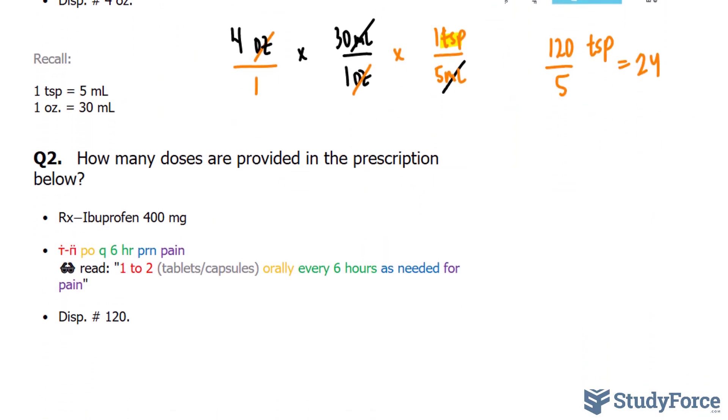This time we're asked, how many doses are provided in the prescription below? We're prescribed ibuprofen, 400 milligrams.